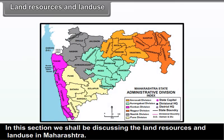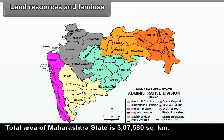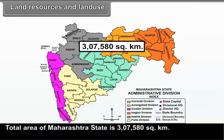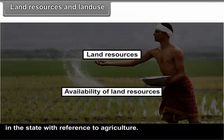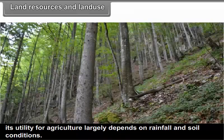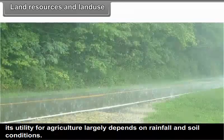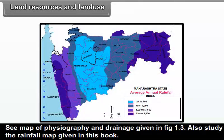In this section, we shall be discussing the land resources and land use in Maharashtra. Total area of Maharashtra state is 3,07,580 square kilometers. Agriculture claims maximum proportion of the land resources. We shall discuss the availability of land resources in the state with reference to agriculture. The availability of land for agriculture depends on the relief and slope of the land. Its utility for agriculture largely depends on rainfall and soil conditions. See the map of physiography and drainage given in figure 1.3, and also study the rainfall map given in this book.